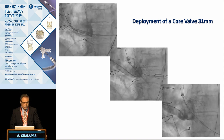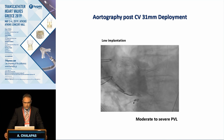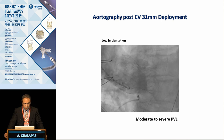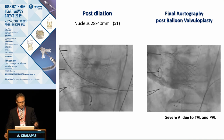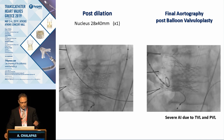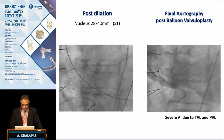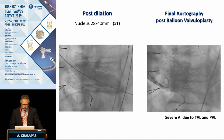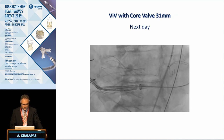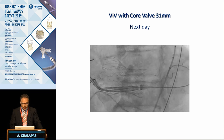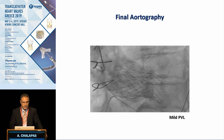Thereafter, we decided to deploy a CoreValve 31 mm, which unfortunately was too low in position, very deep in the LVOT, causing moderate to severe paravalvular leak. We then proceeded with post-dilatation using a 28 mm balloon, but the result was not satisfactory, with severe aortic insufficiency due to both paravalvular and transvalvular leak. Therefore, the next day, we decided to proceed with a valve-in-valve, achieving an excellent hemodynamic result with only mild paravalvular leak.